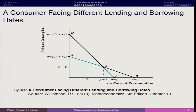If the agent operates in the upper zone he is the lender; if he operates in the lower zone he is the borrower, because this is the current disposable income. So if he is operating beyond this endowment point he is the borrower, and within it he is the lender. Therefore AEF will be the budget constraint of the representative agent.